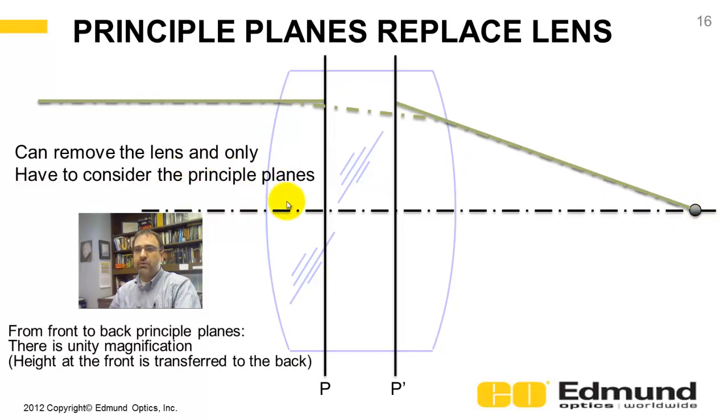You can remove the lens and just consider the planes. Going from the front plane to the back plane, you have unity magnification. If it's a height of one here, it's a height of one on the back as well.